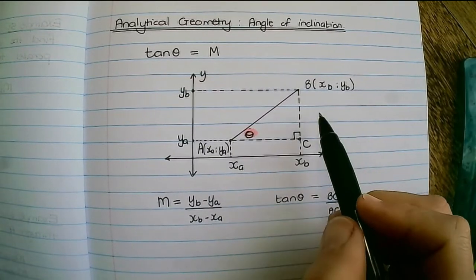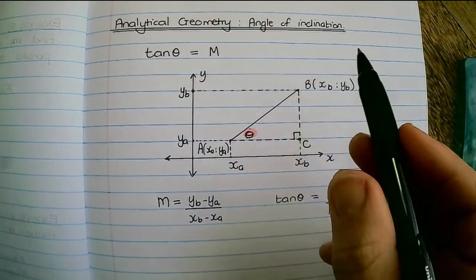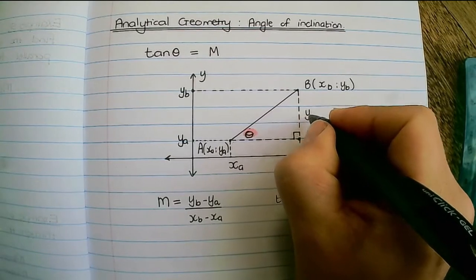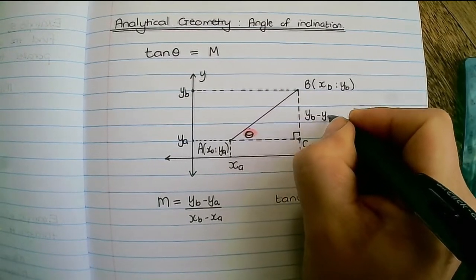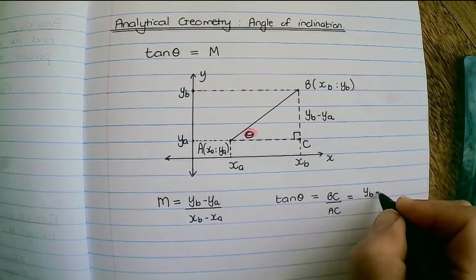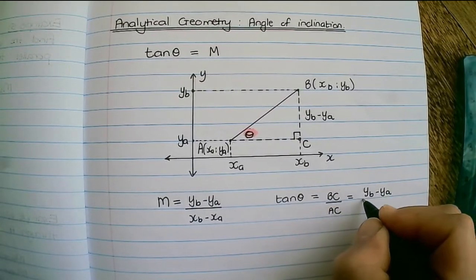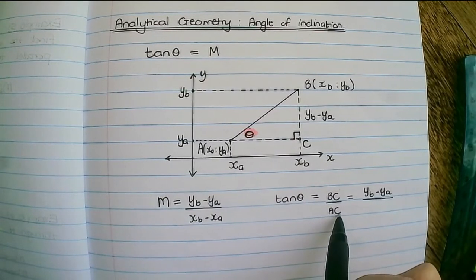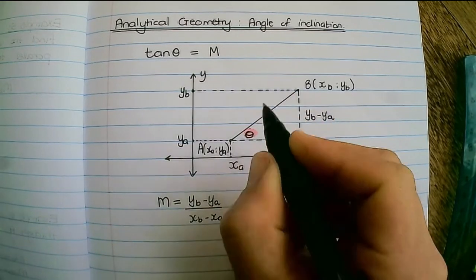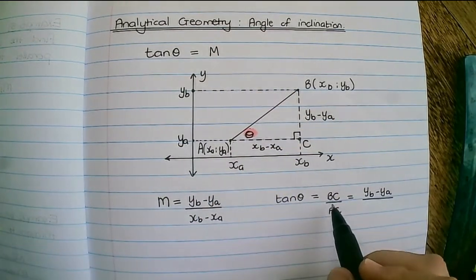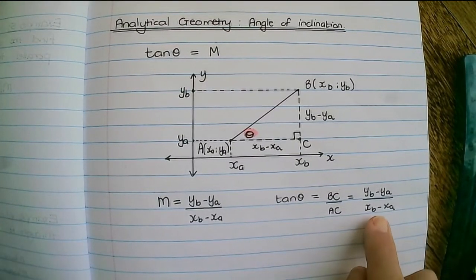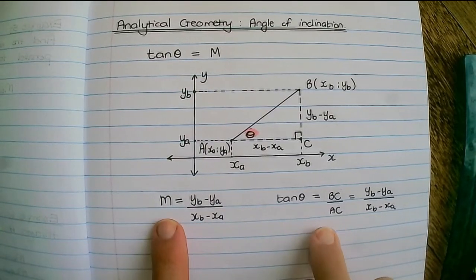But now the length of BC is the difference between the y of B and the y of A, so it is y of B minus y of A. So I can substitute BC with y of B minus y of A. And then the distance of AC is the difference between the x of B and the x of A. So if I substitute AC with that difference I have a fraction that looks similar to that of a gradient.